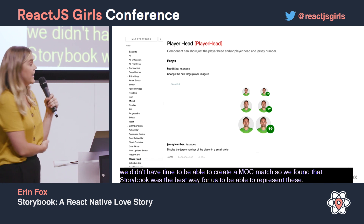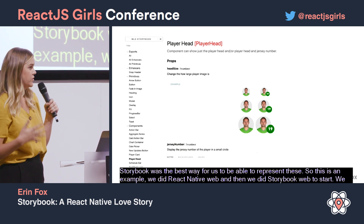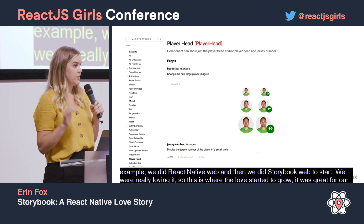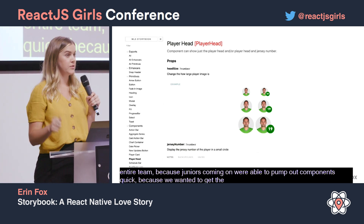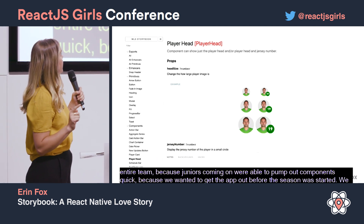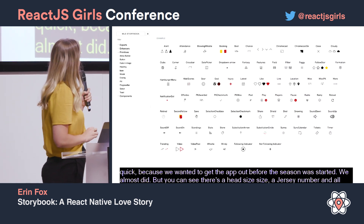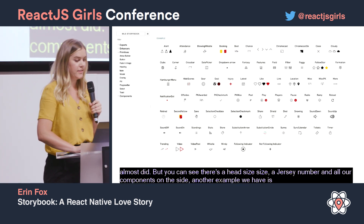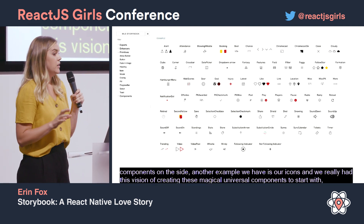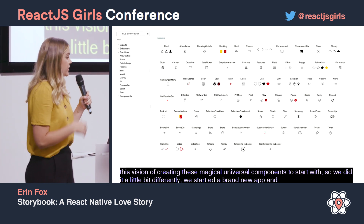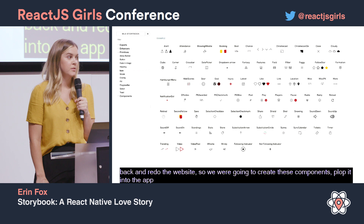We did React Native Web and then Storybook Web to start, and we were really loving it — this is where the love started to grow. It was great for the entire team because juniors coming on were able to pump out components quickly, since we wanted to get the app out before the season started. You can see there's a head size, a jersey number, and all the lists of our other components on the side. We also had this vision of creating magical, universal components — we started a brand new app and were going to go back and redo the website.